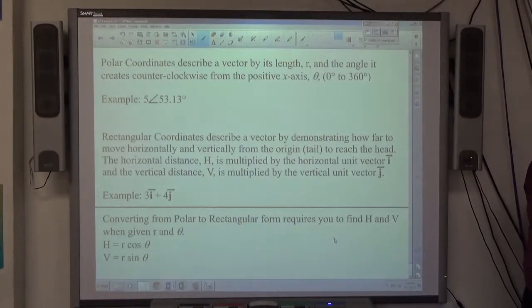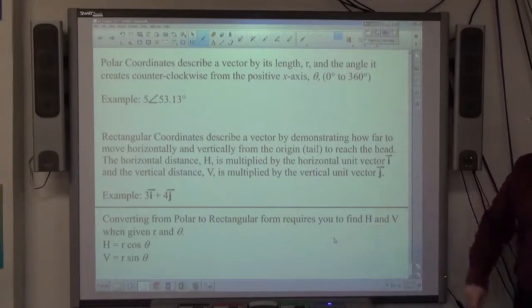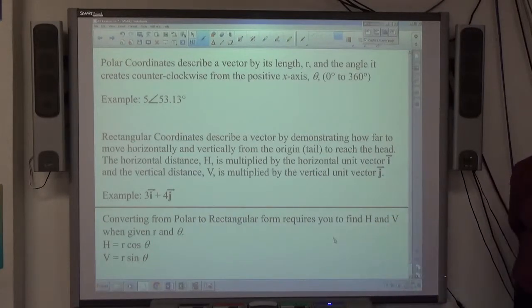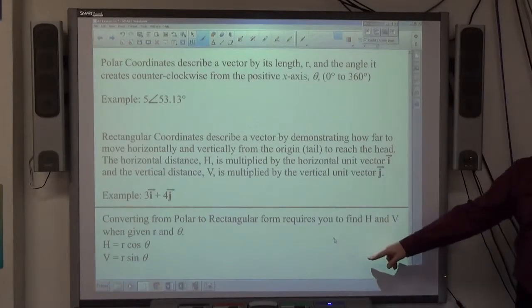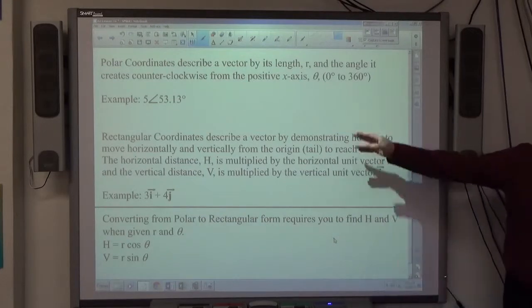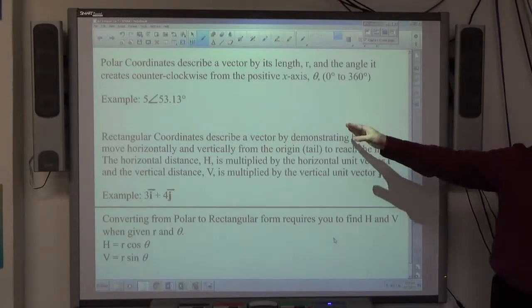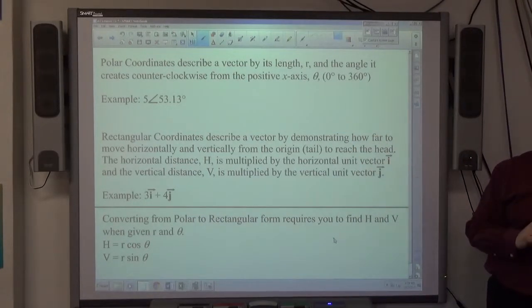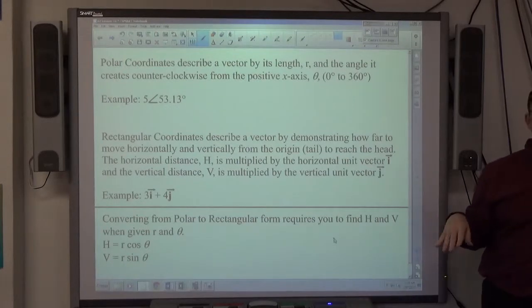Examples 1 and 2 involve converting from polar to rectangular form, which is this down here. We'll call this the easy way. And then we're going to convert from rectangular to polar form. That's a little bit more challenging. That's going to be a lesson down the road.